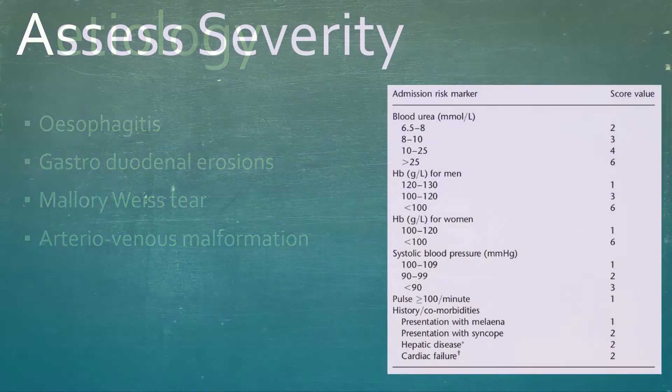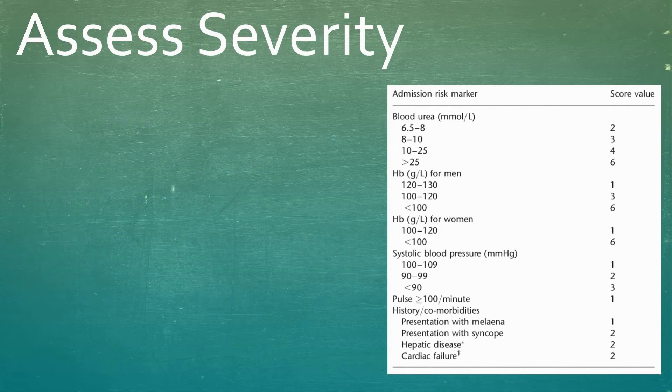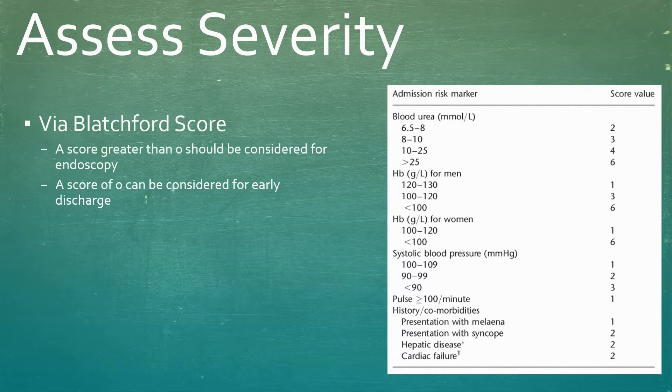So to begin with, if a patient presents with an upper GI bleed, assess them via the Blatchford score shown on the right. A score greater than zero should be considered for endoscopy. A score of zero can be considered for early discharge.